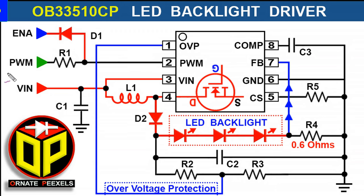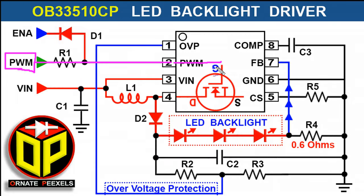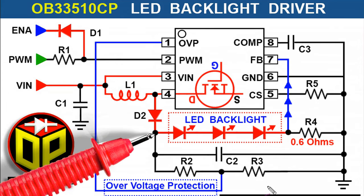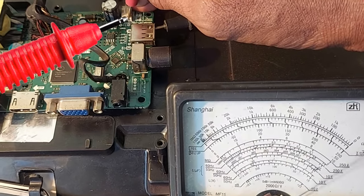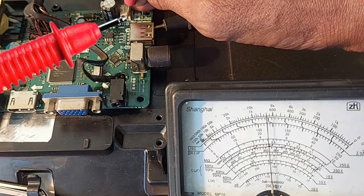The PWM signal comes from the processor IC of the LED TV. This time-controlled pulse width modulation system is actually digital data, but behaves like an analog signal. This PWM signal comes here and normally controls the output voltage, but here we measured around 60 volts, and then it immediately goes into over-voltage protection mode.